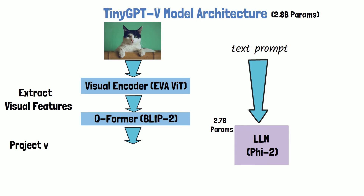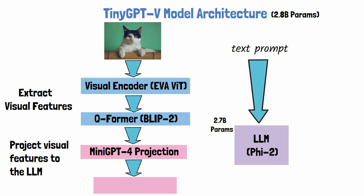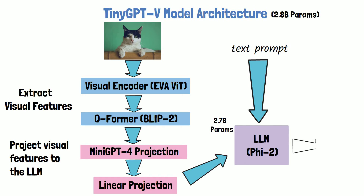Once we have the visual features, we need to project them into the dimension that PHY2 can process. We do that using two projection layers. The first is taken from the MiniGPT-4 model to save training time, and another one that converts the size from MiniGPT-4 to PHY2. After passing through the projection layers, the embedded features are fed into PHY2, combined with the text prompt, to get an output with reasoning on both text and image.